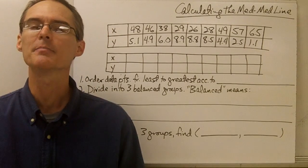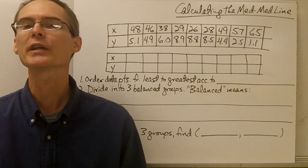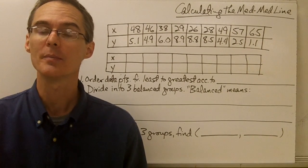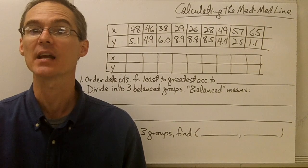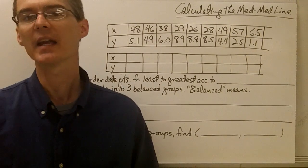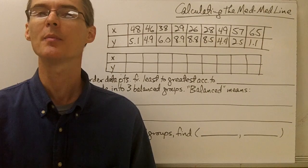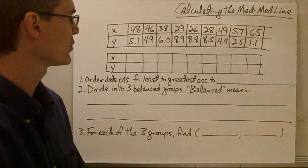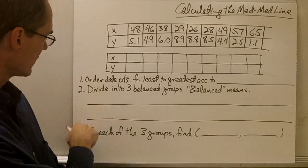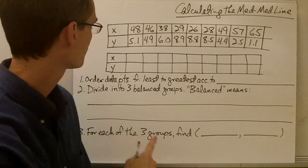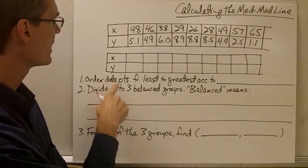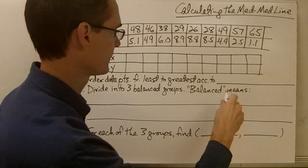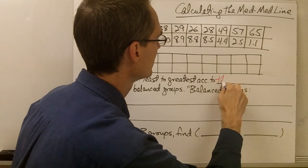This video is called Calculating the Median-Median Line. We're going to look at how your calculator goes about calculating the equation for the median-median line given a set of data points. The first thing your calculator does is come up with three summary points. Coming up with the summary points is a three-step process, and the first step is that you order your data points from least to greatest according to your independent variable.